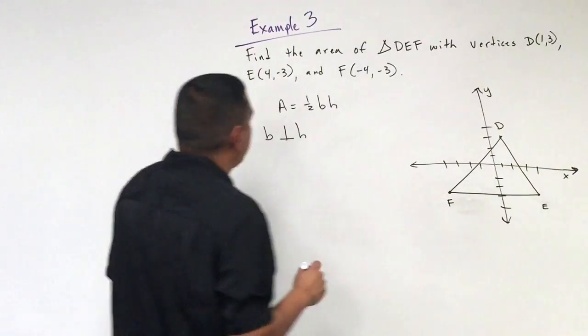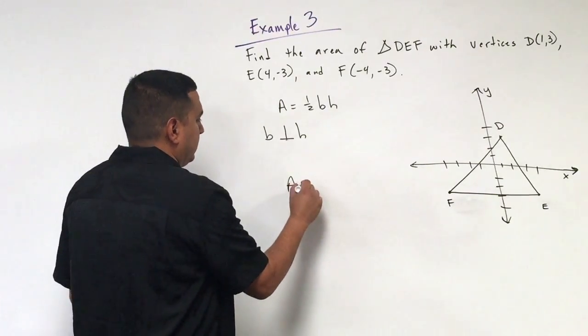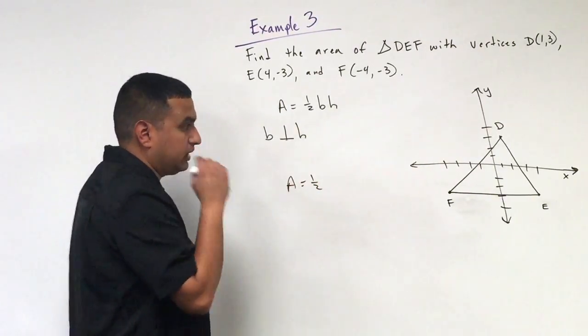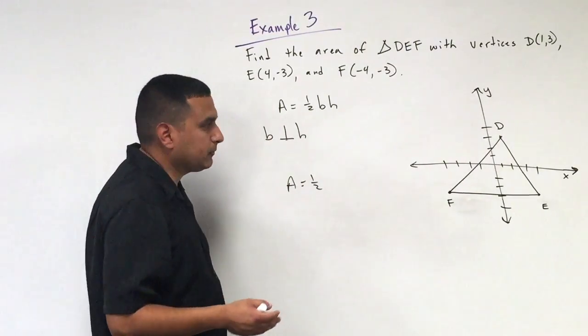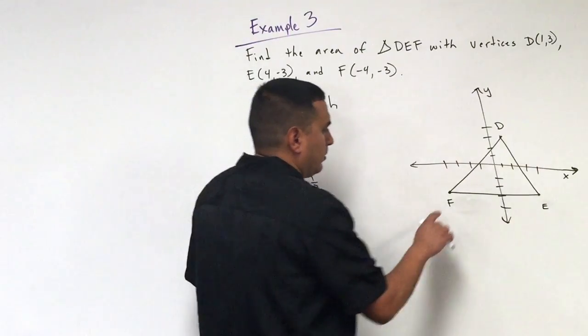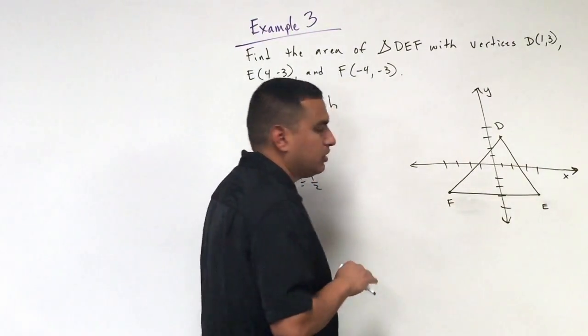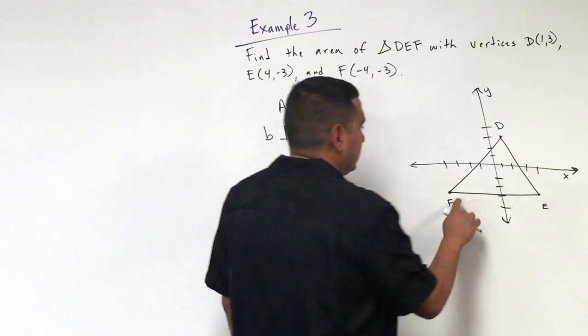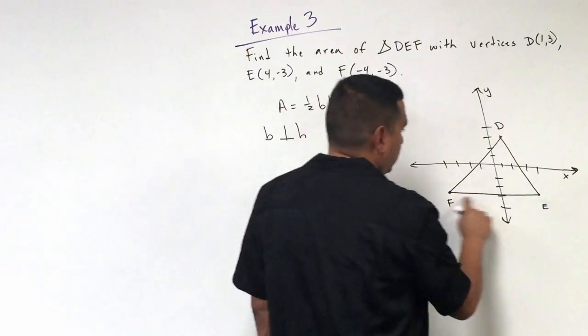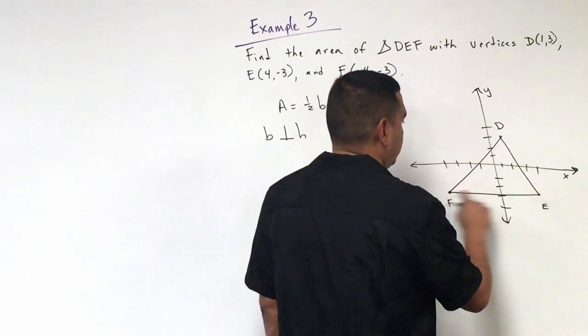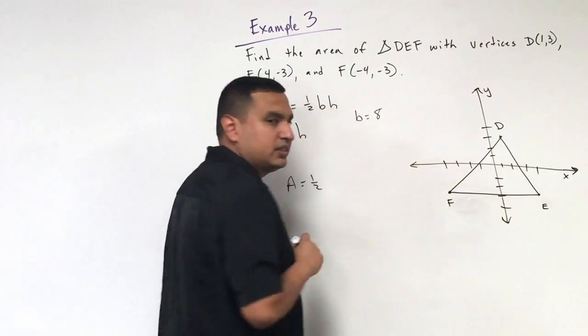The way I do problems like this when I'm looking at the coordinate plane is I take, if I can get either horizontal line or vertical line, that's the line that I want to use. So this right here, this line of segment EF or FE, is horizontal. So I can use this as my base. So my base is going to equal this distance from negative four to positive four on the x-axis. So if I count that up, it's going to give me my base of eight.